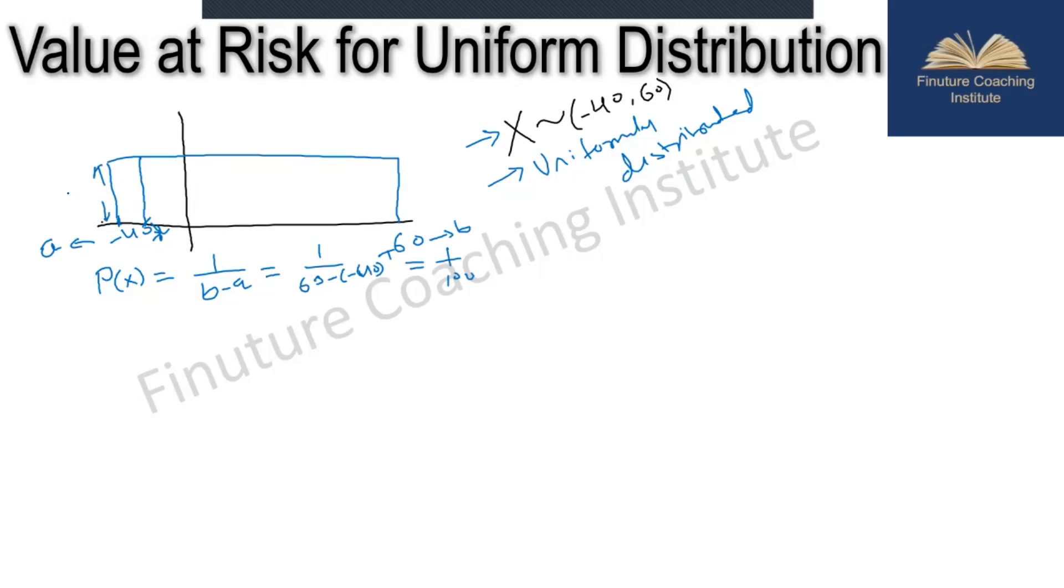We have the probability value of 1 over 100, and this area under the bar, we have to find the 5th percentile. So this portion is 5% of the total rectangle. This is the width we have to find. If we recollect, area of a rectangle is length into breadth. Area is 5%, so 0.05 equals length which is 1 by 100 times breadth. We get breadth as 100 times 0.05, that would be 5.